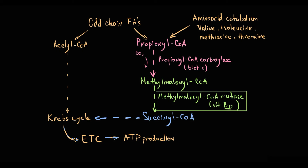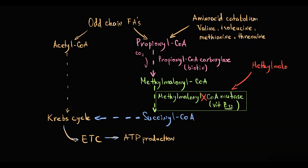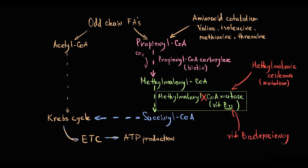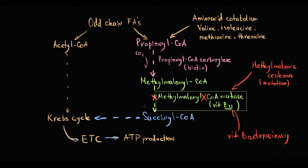There are two reasons why methylmalonyl-CoA mutase can be defective: first, due to a mutation, or second, in the case of vitamin B12 deficiency. If the cofactor is absent, the activity of methylmalonyl-CoA mutase is extremely low, so without vitamin B12 this reaction is essentially impossible.